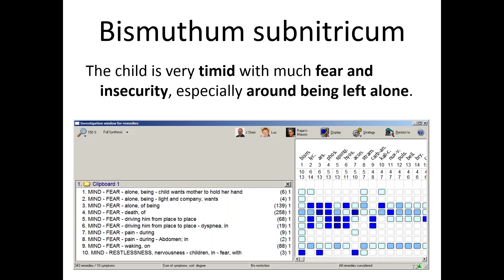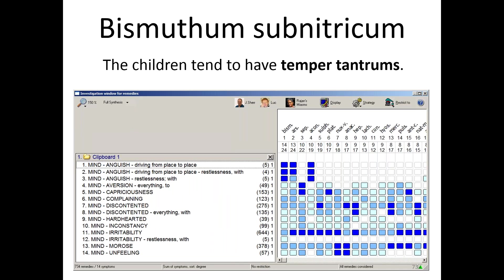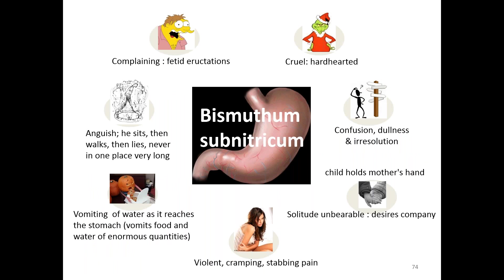Like Gallicum Acidum, Stramonium, Tuberculinum, and related remedies, Bismuth subnitricum can have very strong temper tantrums — another reason you could confuse it with Gallicum Acidum. But the key difference is that in Bismuth subnitricum, the precipitating factor will primarily be the pain around the stomach area, while in Gallicum Acidum it will be some type of relational or environmental insecurity.